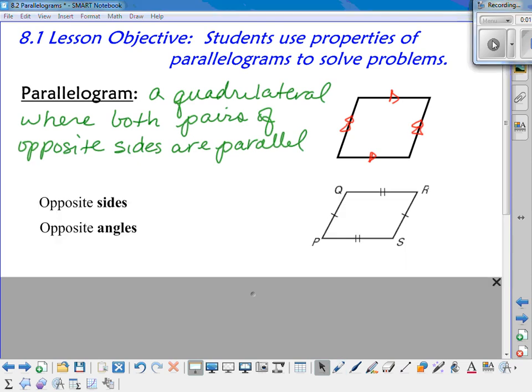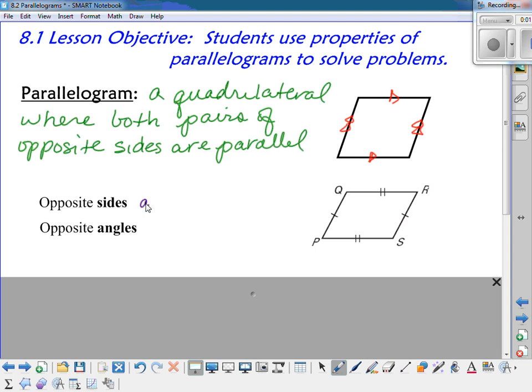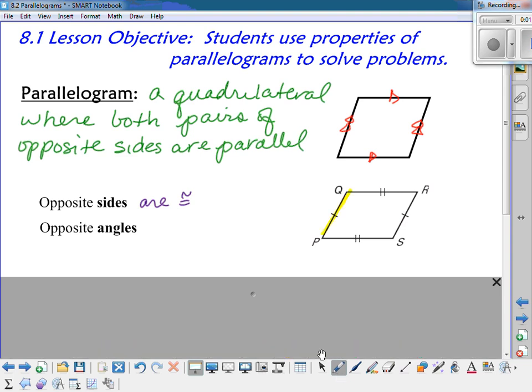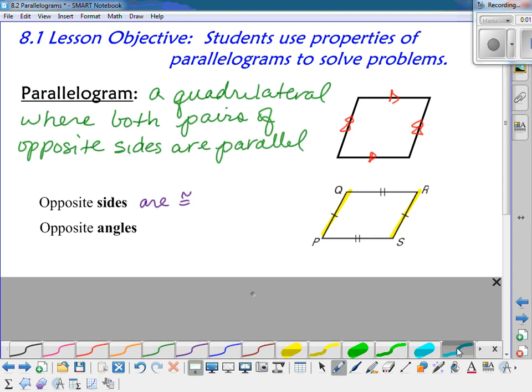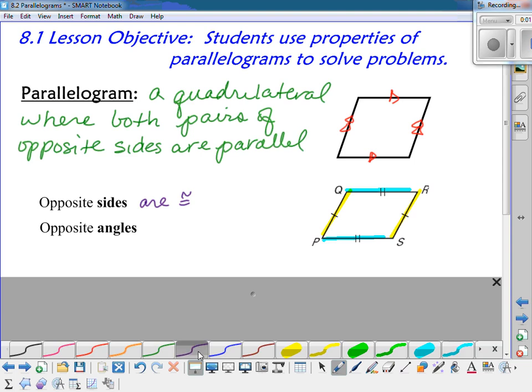So the first two properties of a parallelogram that you need to know about is that the opposite sides are congruent, both pairs of opposite sides. So in the figure you can see that QP is congruent to RS and QR is congruent to PS.